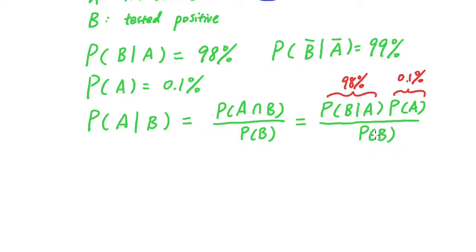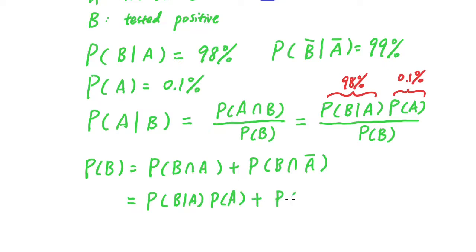To calculate P(B), we can express P(B) as P(B and A) plus P(B and not A). And then we can write this as the conditional probability of B given A times P(A) plus P(B) given not A, A bar, times P(A bar).